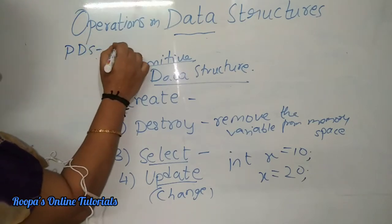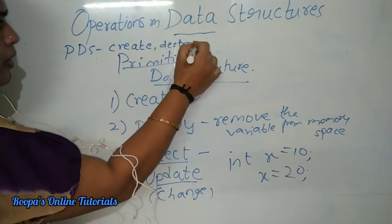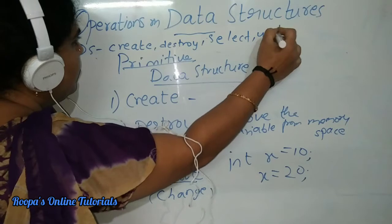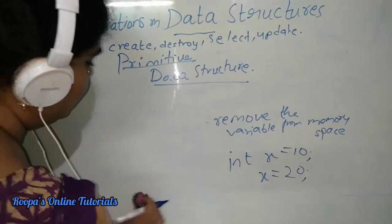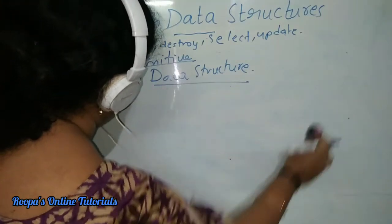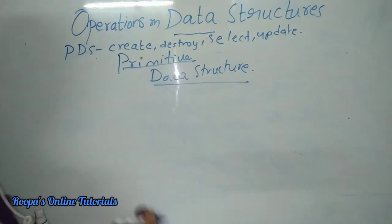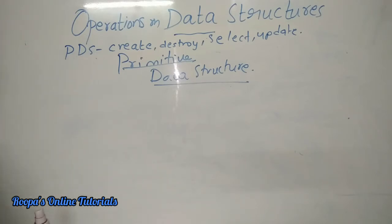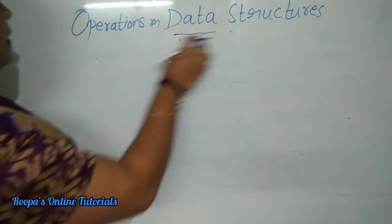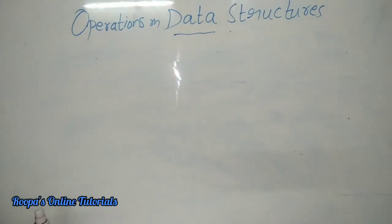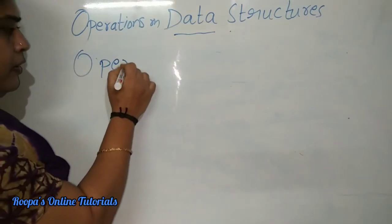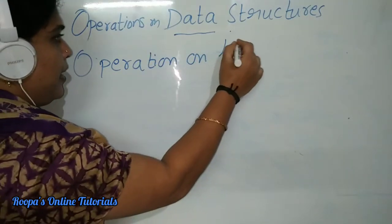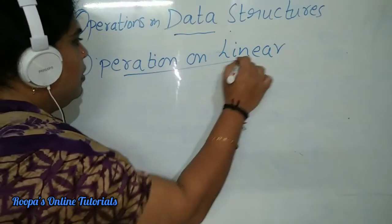To summarize: create is creating a new data structure; destroy is removing a variable or object from memory space; select is accessing a value using the data structure; and update means changing the value. Now we move to the second type — non-primitive data structures such as arrays, stacks, and queues. We will now talk about operations on linear data structures, which is in your syllabus and was asked as a 5-mark question.